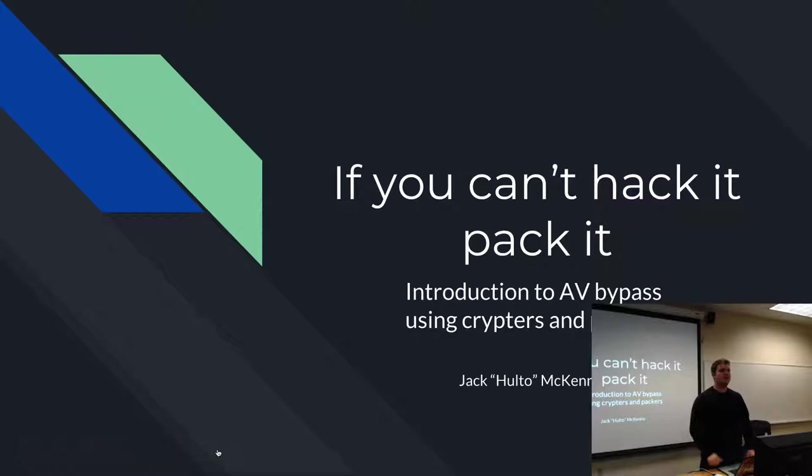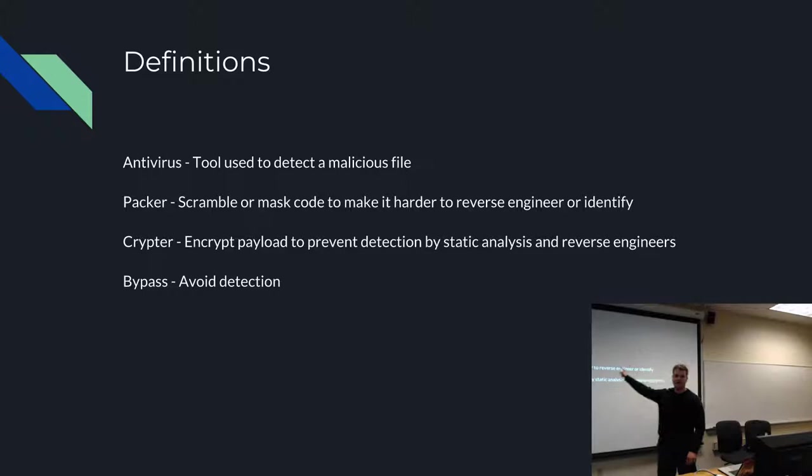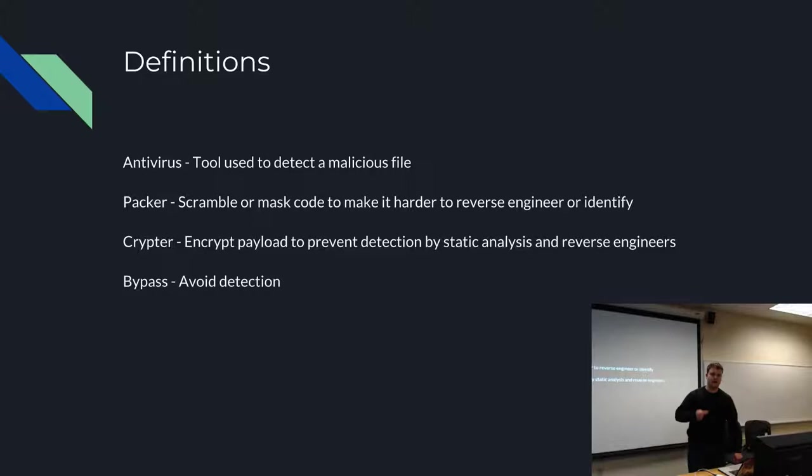Hey, y'all. I'm Halto. I'll be talking to you guys about how to hide malware to get past antivirus. Full disclosure, I haven't looked at these slides since the summer, so we're going to kind of wing it. Some quick definitions: antivirus is a tool used to detect malware, a packer is something used to scramble malware, a crypter is something used to encrypt malware, and a bypass is a way to avoid detection.